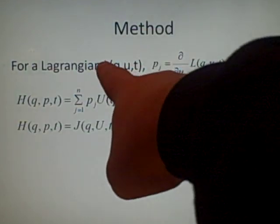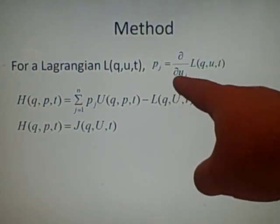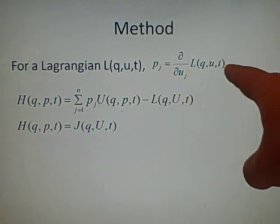Now for your Lagrangian, first you want to find the conjugate momenta, which is here, the p_j, which equals ∂/∂u_j of the Lagrangian.